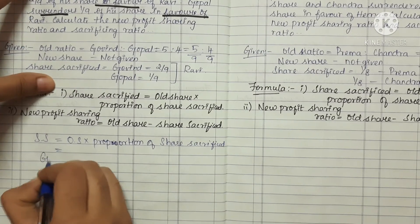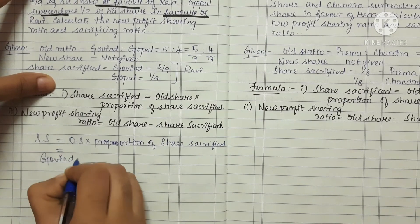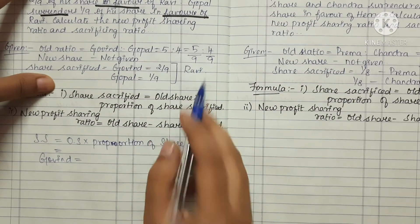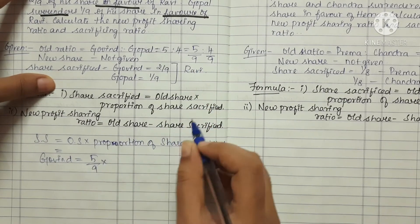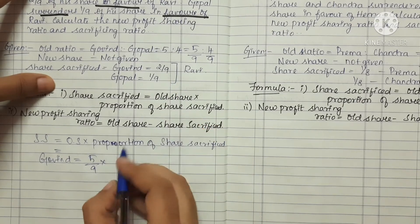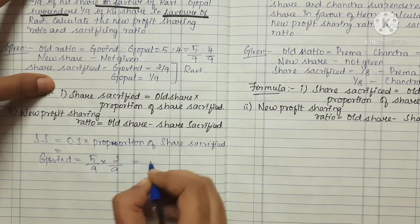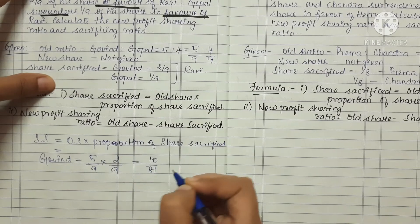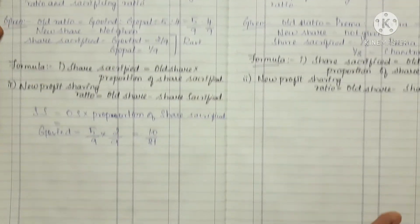For Gowin, the old share is 5 by 9. So the sacrificing ratio is 5 by 9 into the sacrifice proportion of 2 by 9, which gives us 10 by 81.